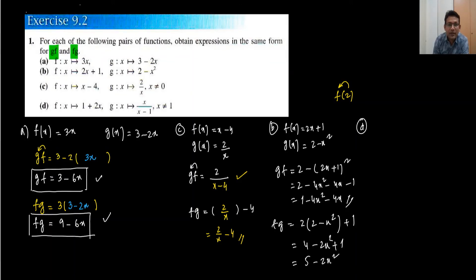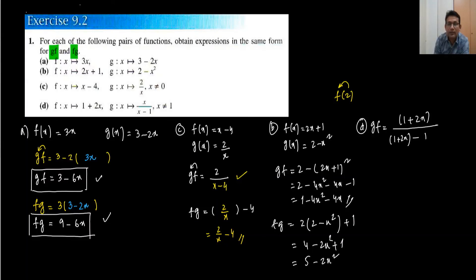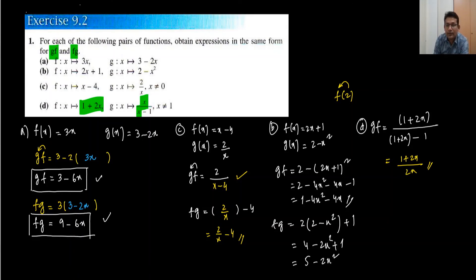Moving to part d. We need to find gf — substitute f into g. g(x) = x/(x - 1), so I write the whole equation of f which is 1 + 2x in place of x: (1 + 2x)/((1 + 2x) - 1) = (1 + 2x)/(2x). For fg, substituting g into f: 1 + 2 × (x/(x-1)) = 1 + 2x/(x-1). You can simplify further if needed.